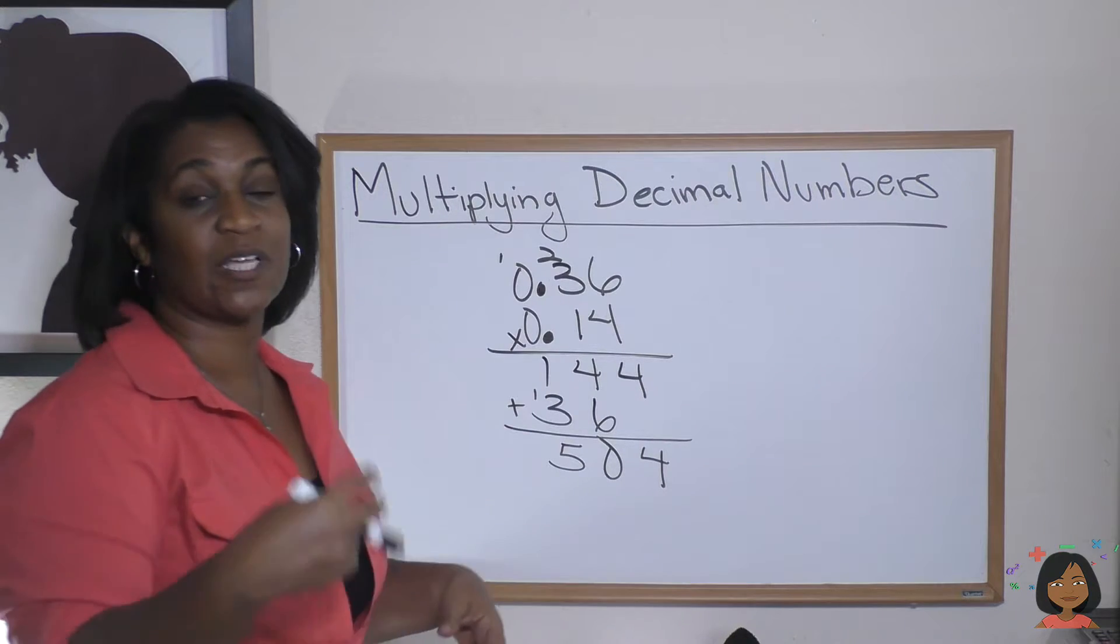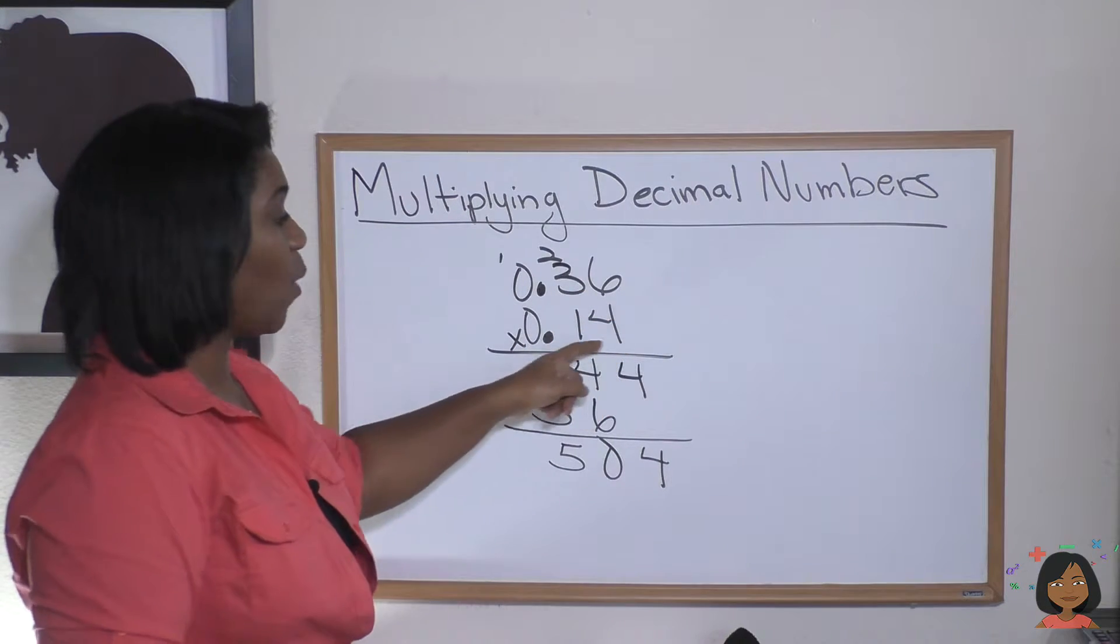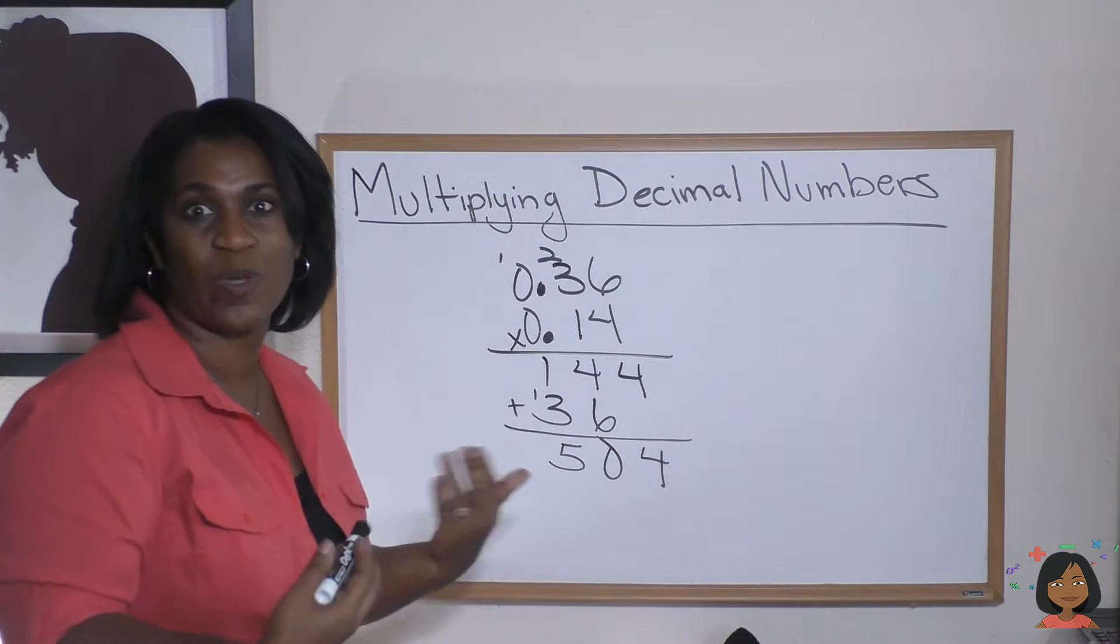So let's count up the number of decimals. Now remember, we're counting looking for the total number of decimals. We have one, two spaces there and one, two spaces there. So we have four decimal places we have to account for.